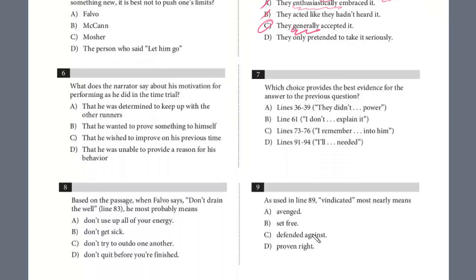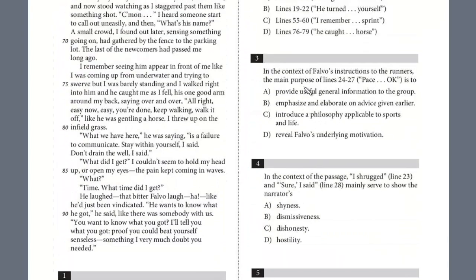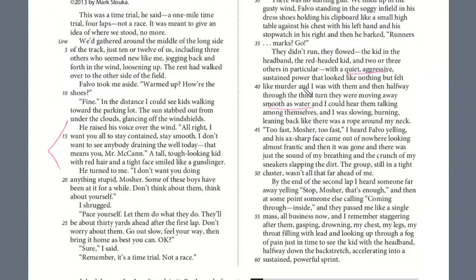Let's take a look at six. We always want to scan at the next question - six and seven. It is a two-part question. We're looking for evidence. What does the narrator say about his motivation for performing as he did in the time trial? This is Mosier, the narrator. What is his motivation for performing as he did? We know he didn't listen to the coach. He exerted himself. So we're looking for some evidence of an explanation why he did this. We know it's between line 36 and 94. This is probably going to be after the race started.